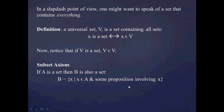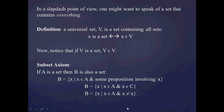It may be the case that no objects in A fall under the restriction, in which case B would be the empty set, which is perfectly fine since the empty set is a subset of any set. For example, we could use the proposition 'X is a member of C' for some other set C, in which case B would be A intersect C. Or we could use 'X is not equal to X,' giving the empty set.